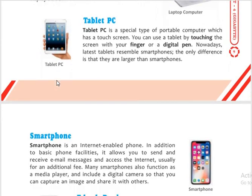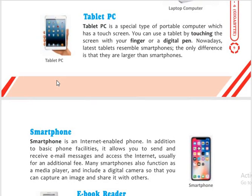A tablet PC is slightly bigger in size compared to a smartphone. It is a special type of portable computer with a touch screen that you can use by touching the screen with a finger or digital pen. Nowadays, the latest tablets resemble smartphones — the only difference is that they are larger.